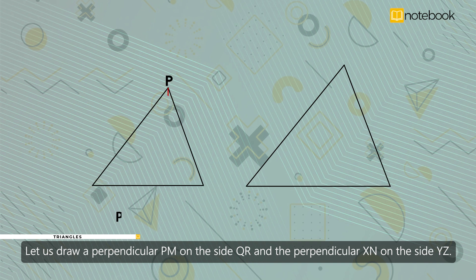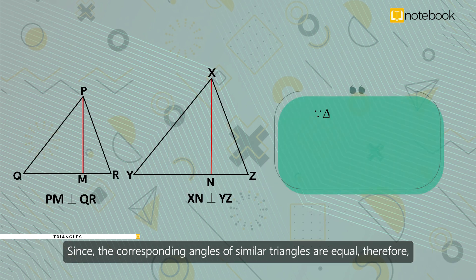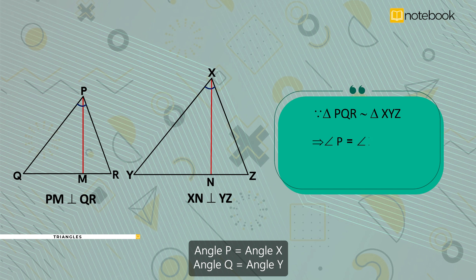Let us draw a perpendicular PM on the side QR, and the perpendicular XN on the side YZ. Since the corresponding angles of similar triangles are equal, therefore angle P is equal to angle X, angle Q is equal to angle Y, angle R is equal to angle Z.